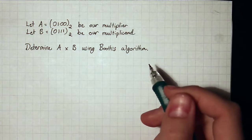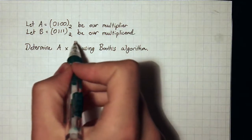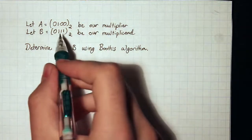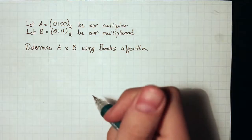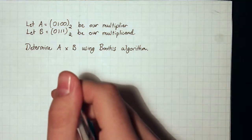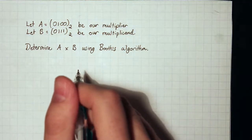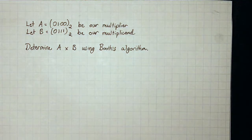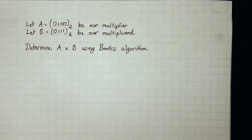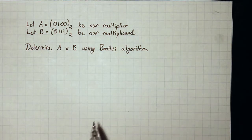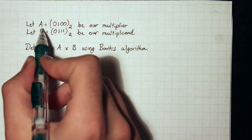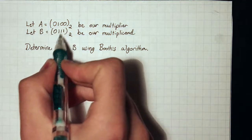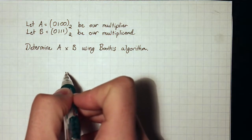Since these are both 4-bit numbers, we know that our product register is going to be 8 bits wide. Your product register is always going to be twice the width of your larger number. In this class, the only numbers you'll encounter will be of the same width, so you can always just double one of the widths. So since A is 4 bits wide, our product register is going to be 8 bits.